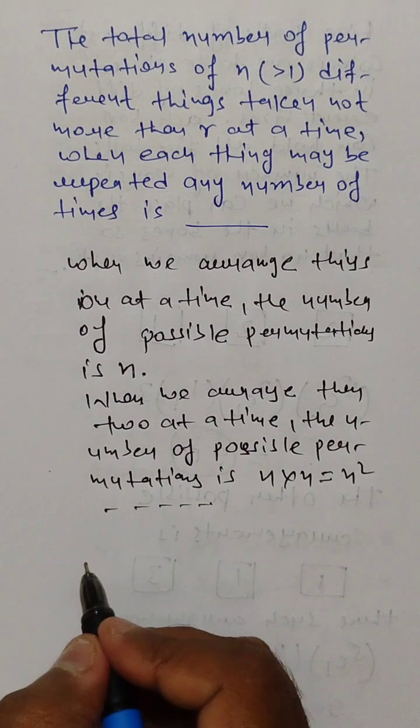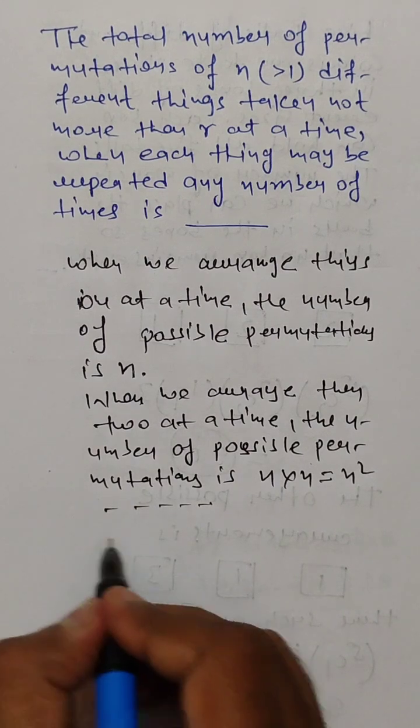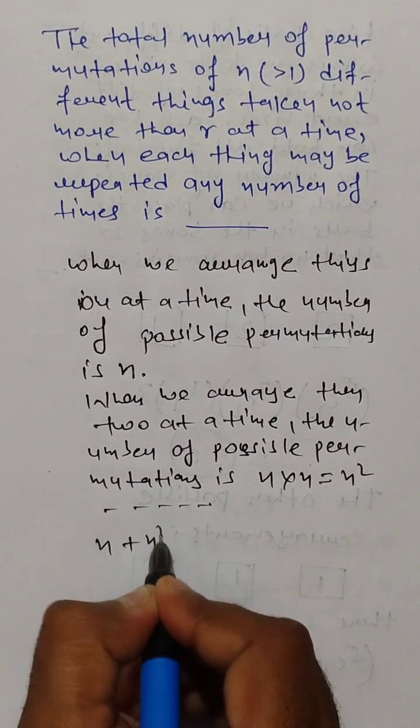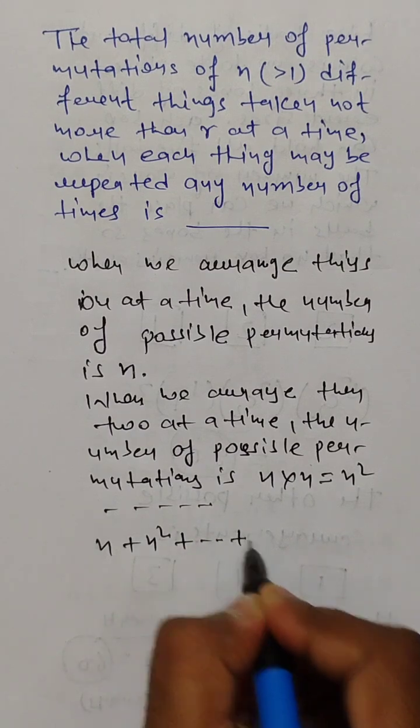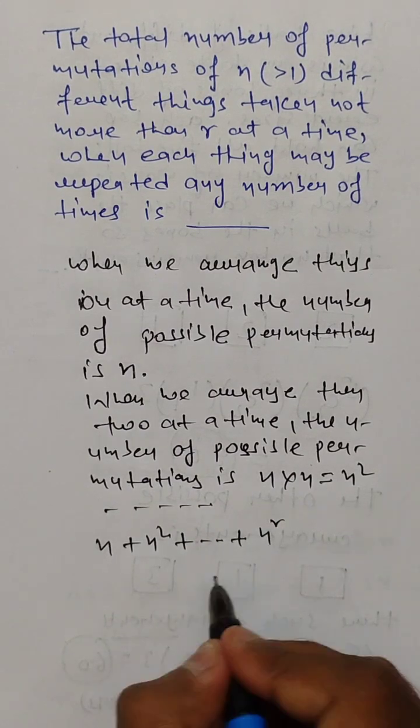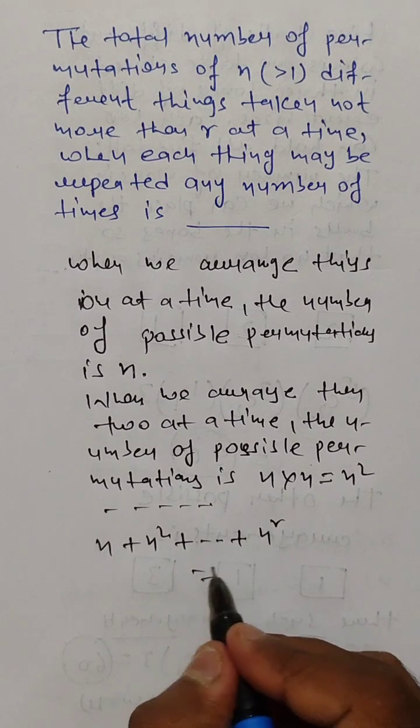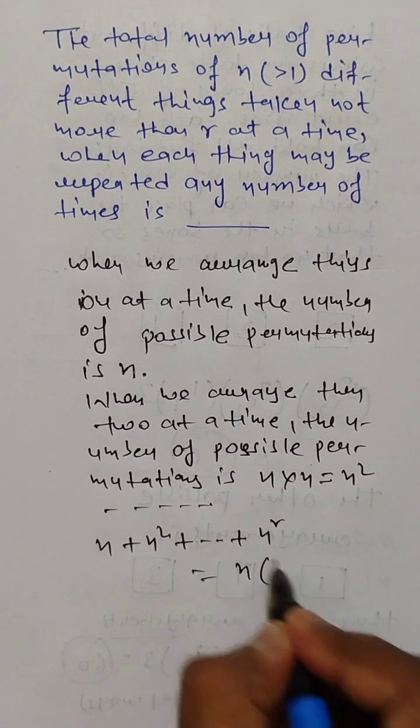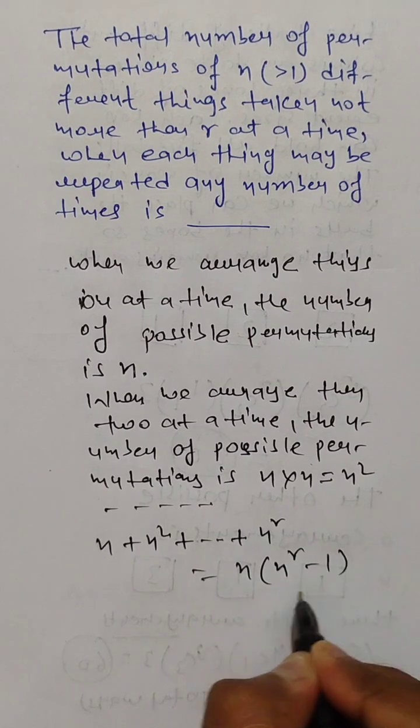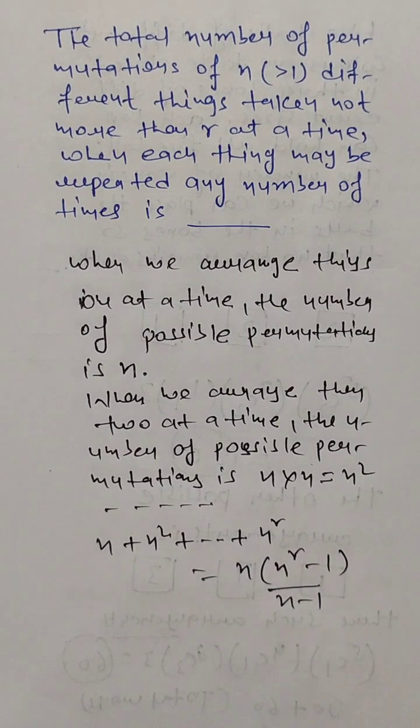And this will continue, so the total number of permutations we have is n plus n square plus dot dot up to n to the power r. This is a GP with common ratio n, so this is equal to n of n to the power r minus 1 by n minus 1.